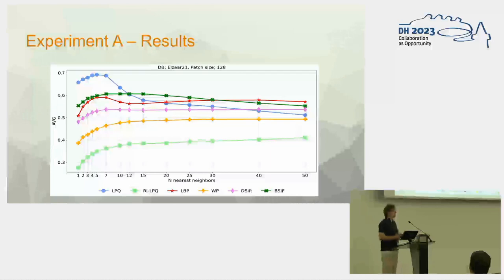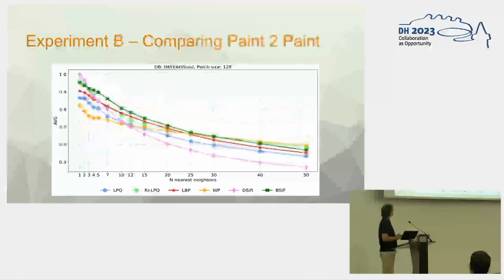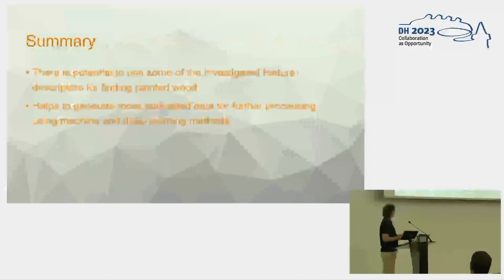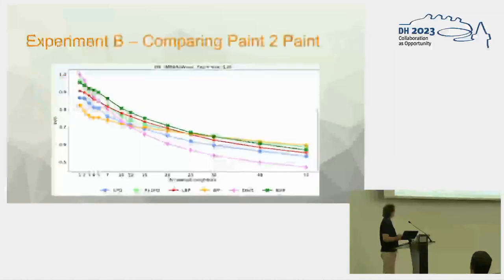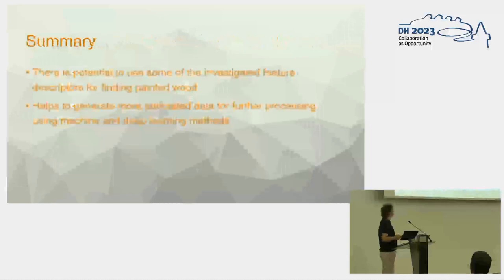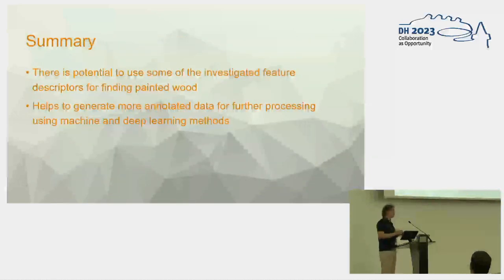And we can see that there were at least three of these descriptors which are able to a little bit better than guessing to find these patches. So we are here a little bit above 50% of the first n positions are really painted wood. So this is not really exciting and therefore we make a sanity check where we use instead of pictures of real wood some subset of the painted wood and there we get better results.